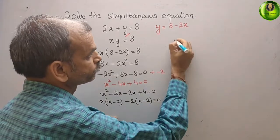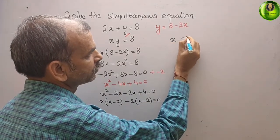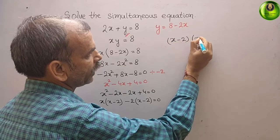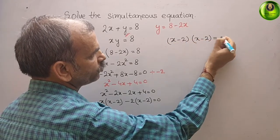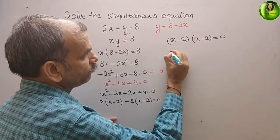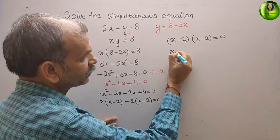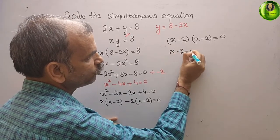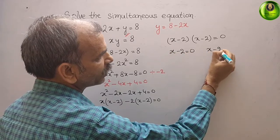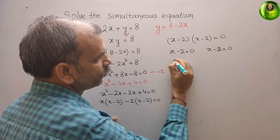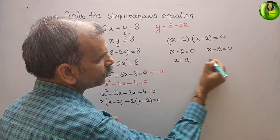That means that x minus 2, x minus 2 are the factors. x minus 2 that gives you 0. We will get x is equal to 2, and here also x is equal to 2.